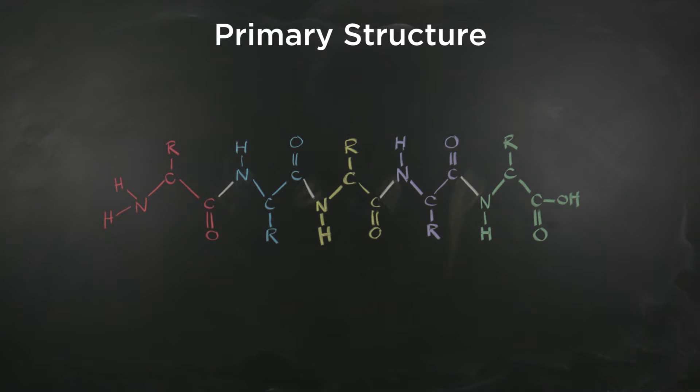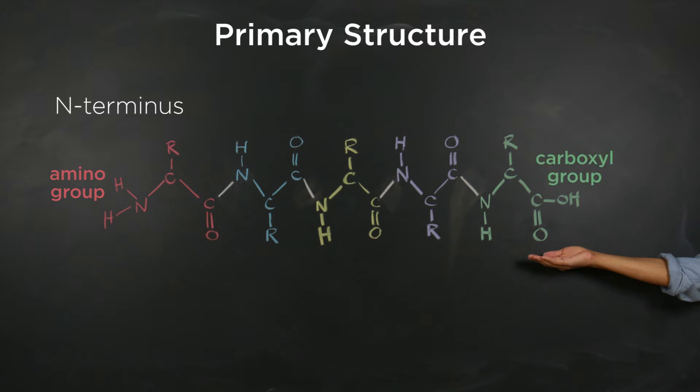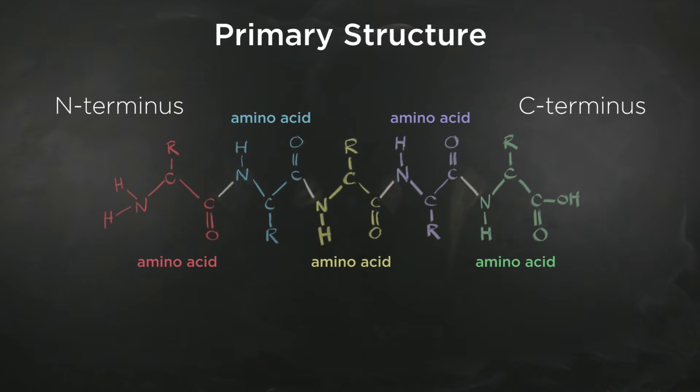Notice that the two ends of the peptide are different. This end on the left of the peptide contains an amino group and is called the N-terminus. The other end to the right has a carboxyl group and is referred to as the C-terminus. Amino acyl residues are always numbered starting from the N-terminus and progressing towards the C-terminus.